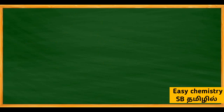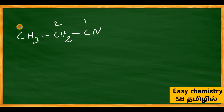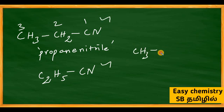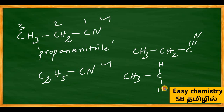Let us look at propanenitrile. Propanenitrile is written as CH3-CH2-C≡N. Propane has three carbons. The structure can also be written as C2H5-C≡N, where CH3-CH2 is the ethyl group attached to the CN group.